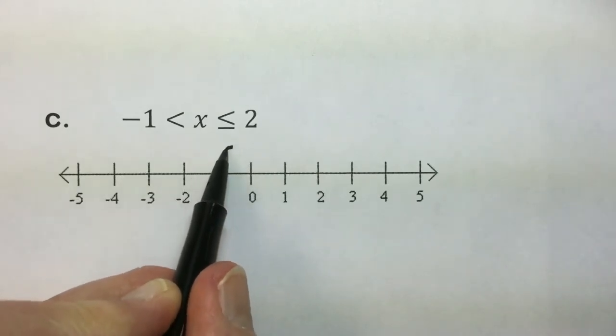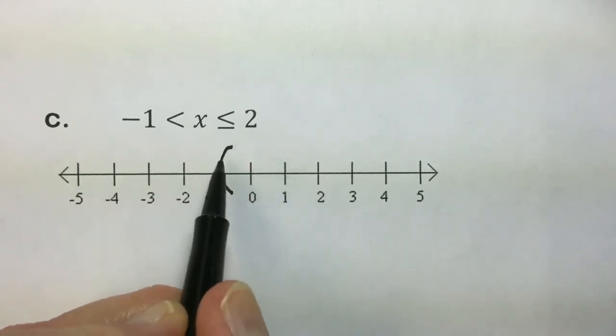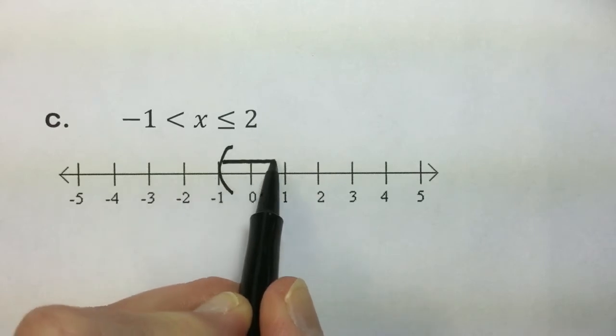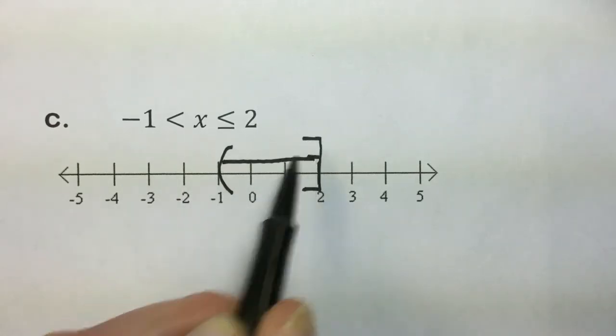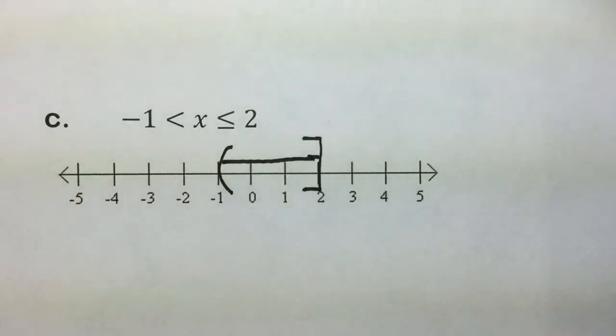We are not including the negative 1, so we have our parenthesis. And we're going as high as and including 2, so we'll put a bracket at 2. So here's our graph for the solution and translating that into the interval notation.